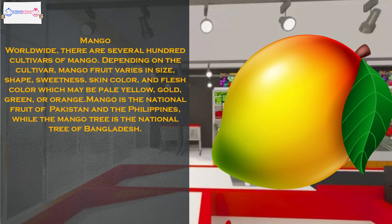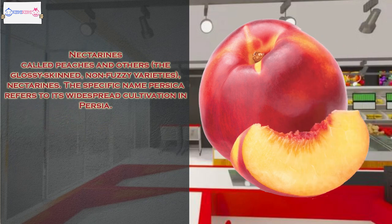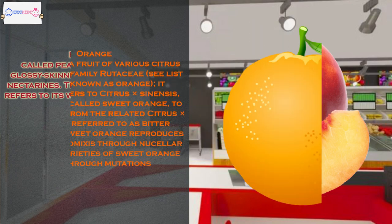Nectarines are called peaches by others — the glossy-skinned, non-fuzzy varieties are called nectarines. The specific name Persica refers to its widespread cultivation in Persia.